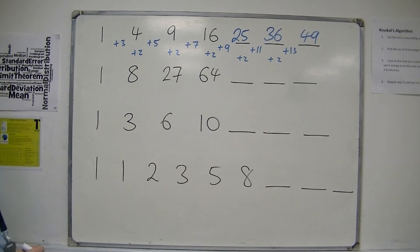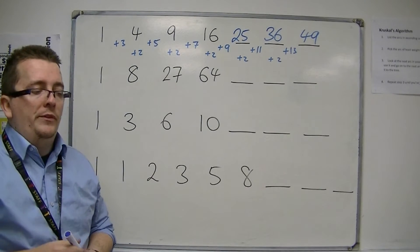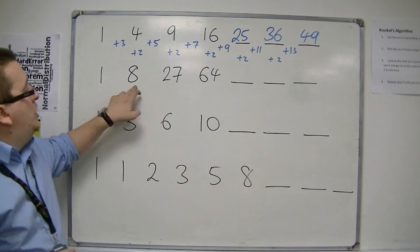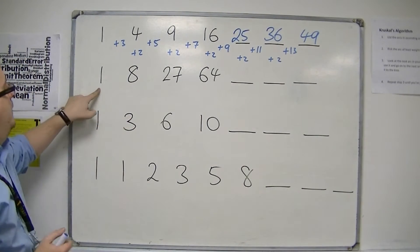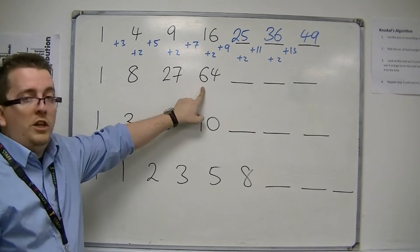The next one, 1, 8, 27, 64, is another set of special numbers. These are the cube numbers. 1 cubed, 2 cubed, 3 cubed, 4 cubed.